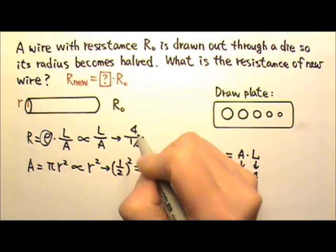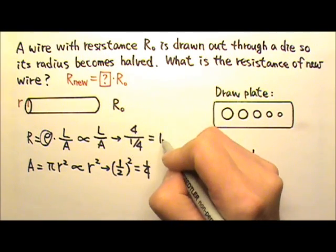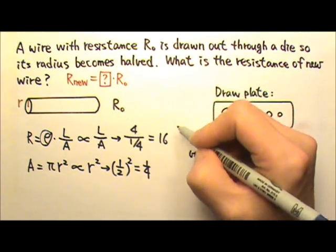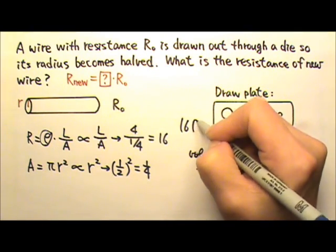So the length changes by a factor of four, and this gives us 16. So the answer must be 16 R naught.